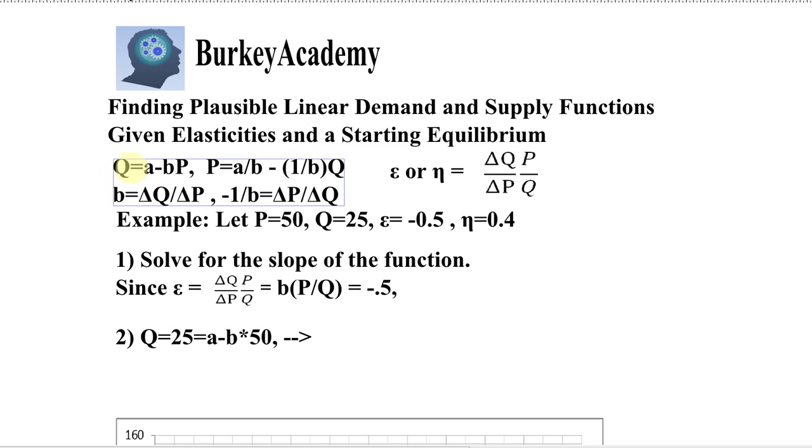Let's start by just writing down what we know about this situation. What we want is a function that looks like Q equals a minus bP, demand line, or an inverse demand function that's easier to graph, which would be just solving this for P, a over b minus 1 over b Q.